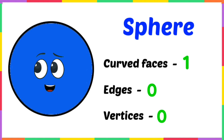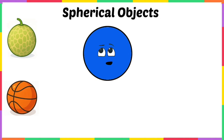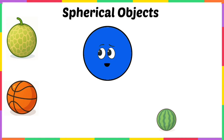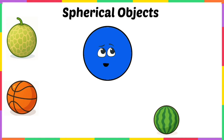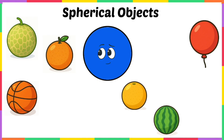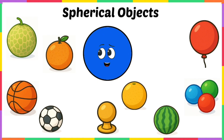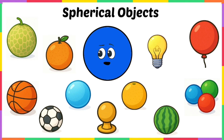You can find me all around you! You can bounce me as a basketball, relish me as a muskmelon, enjoy me as a watermelon, peel me as an orange, squeeze me as a lemon, play with me as a balloon, kick me as a football, roll me as marbles, hold me as a doorknob, giggle with me as a soap bubble, and light me as a bulb. All these objects around you are in the shape of a sphere!